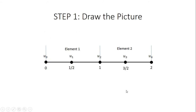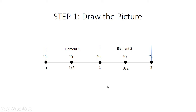The first step in the process is to draw the picture. We are told that we have two quadratic elements in two dimensions, which is why we are dealing with a straight line. A quadratic element means we are going to have three nodes per element. We are told that x goes from 0 to 2 and each node is equally spaced. Element 1 goes from 0 to 1 with a node in the middle at 1/2, and element 2 goes from 1 to 2 with a node in the middle at 3/2.